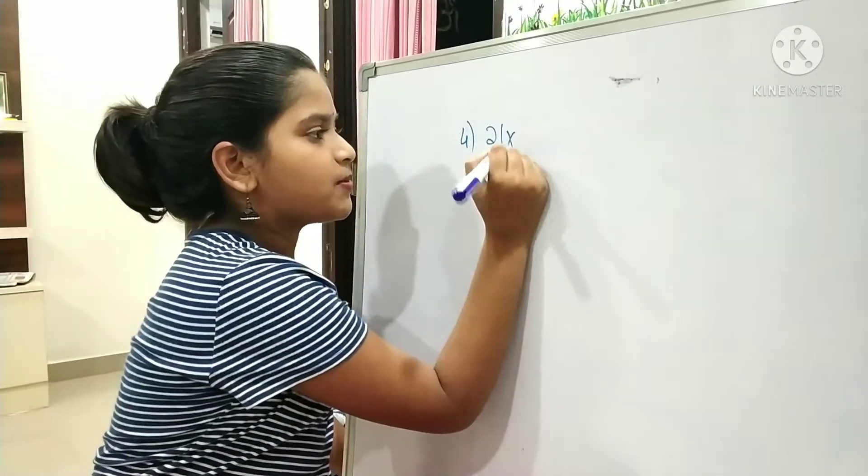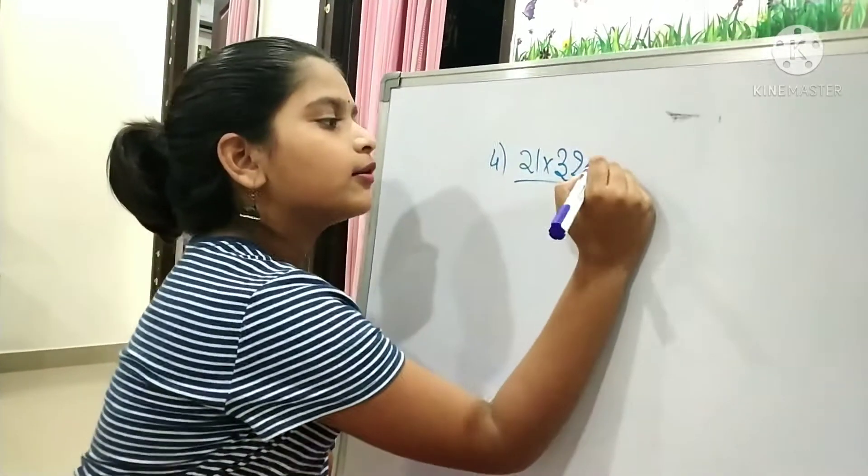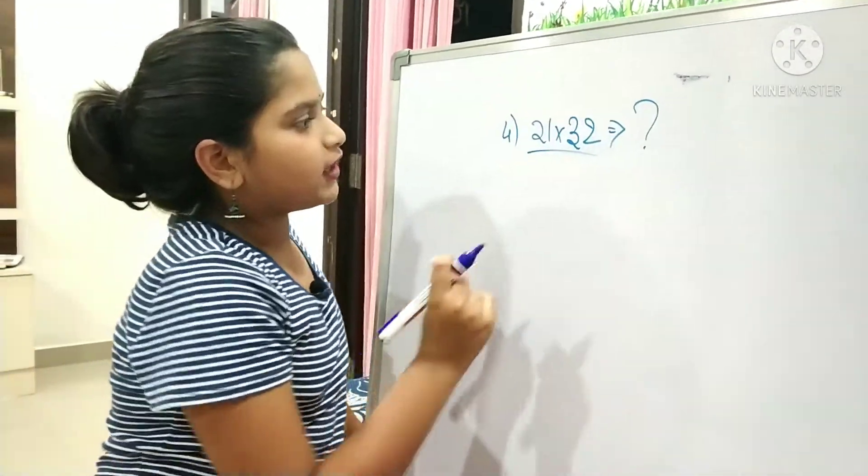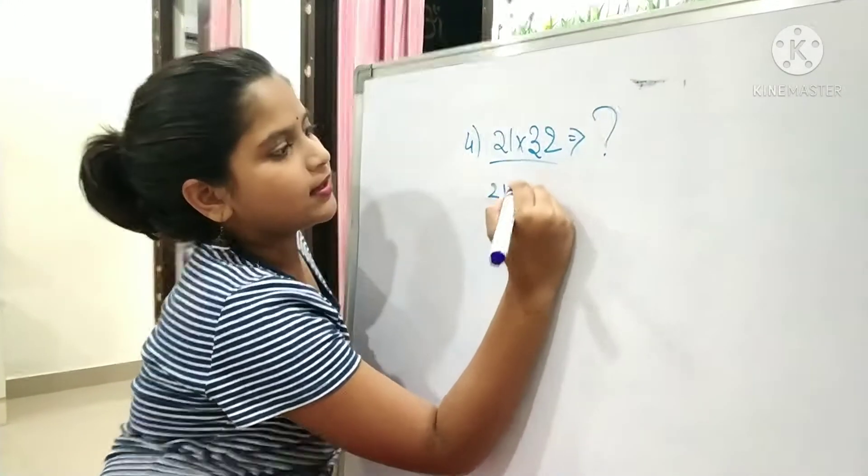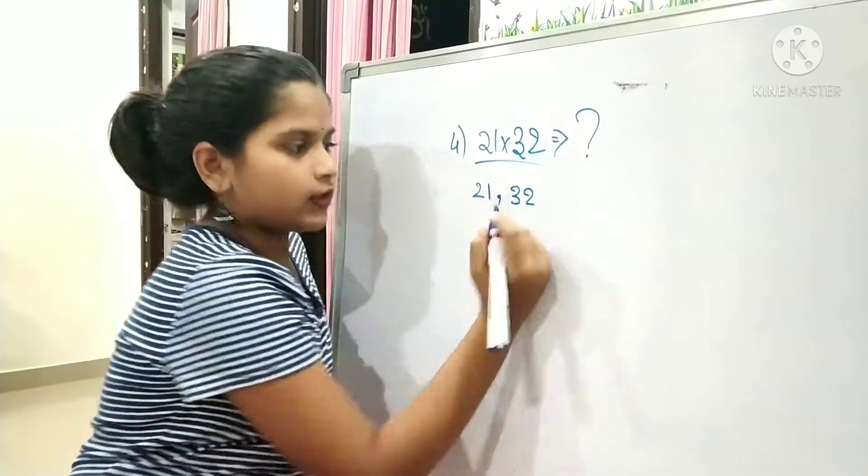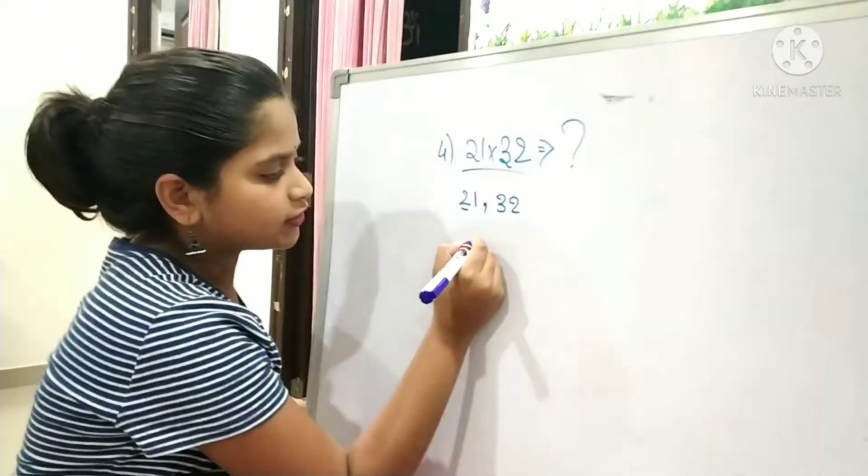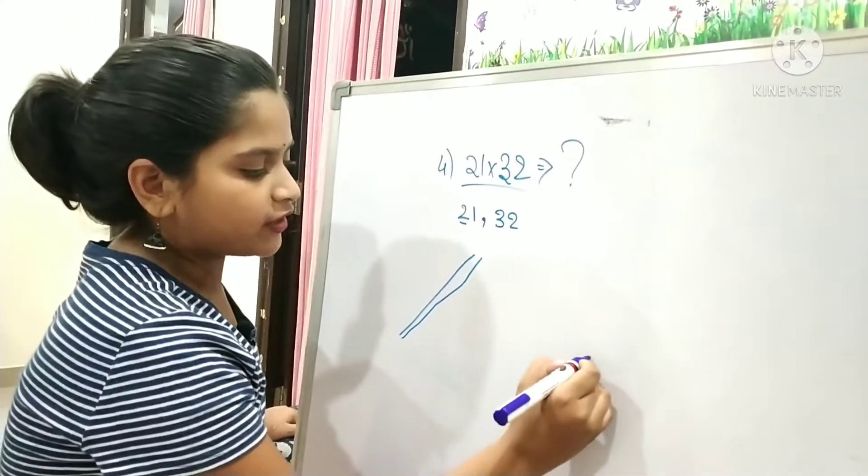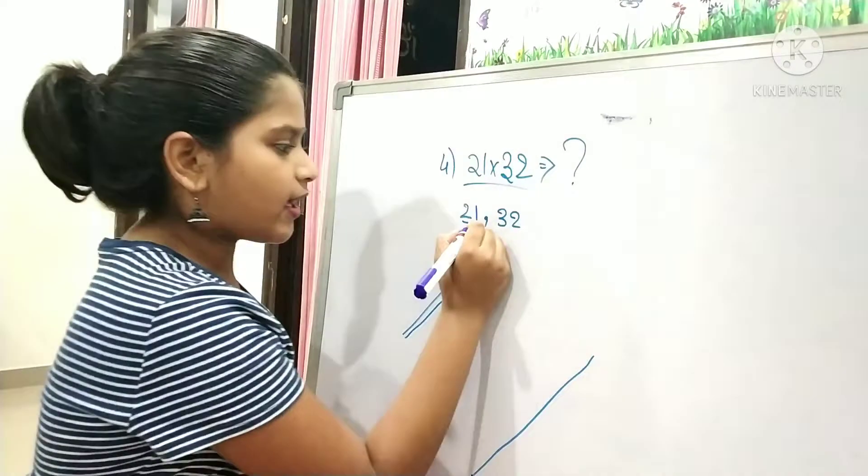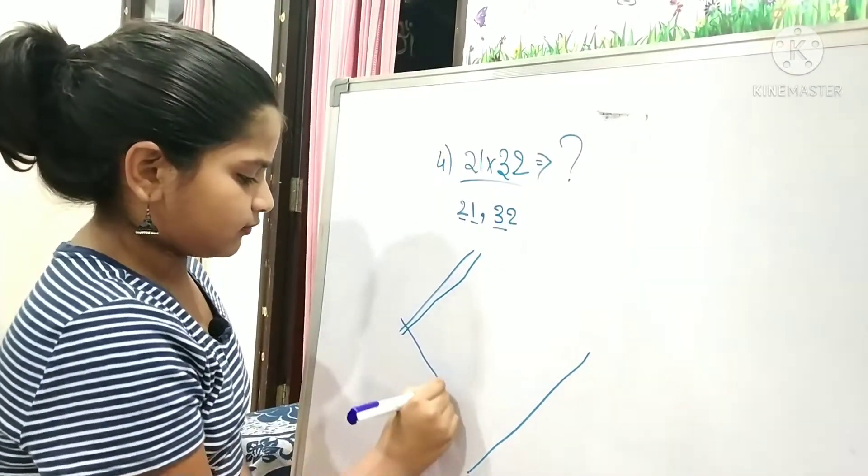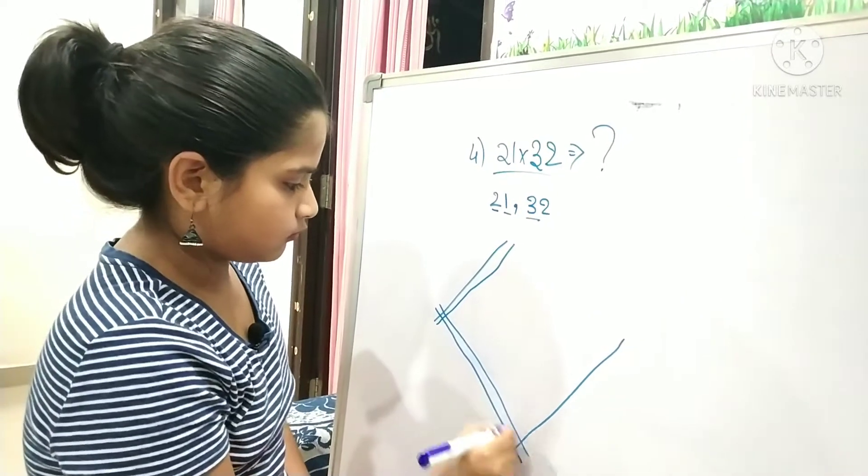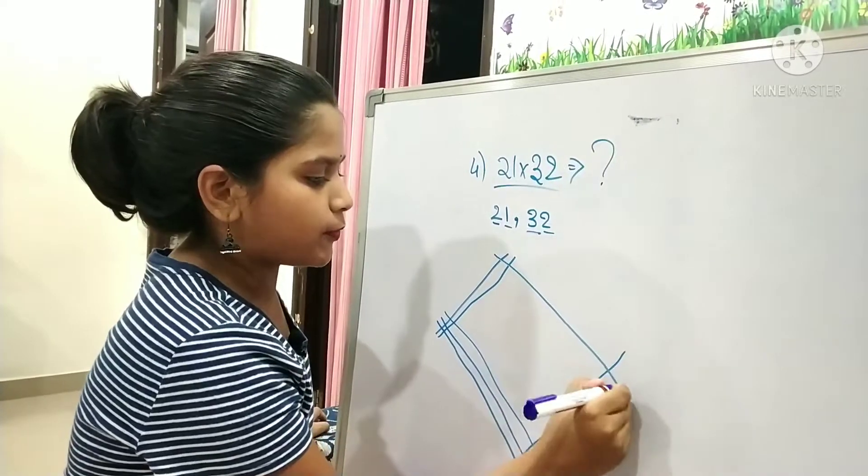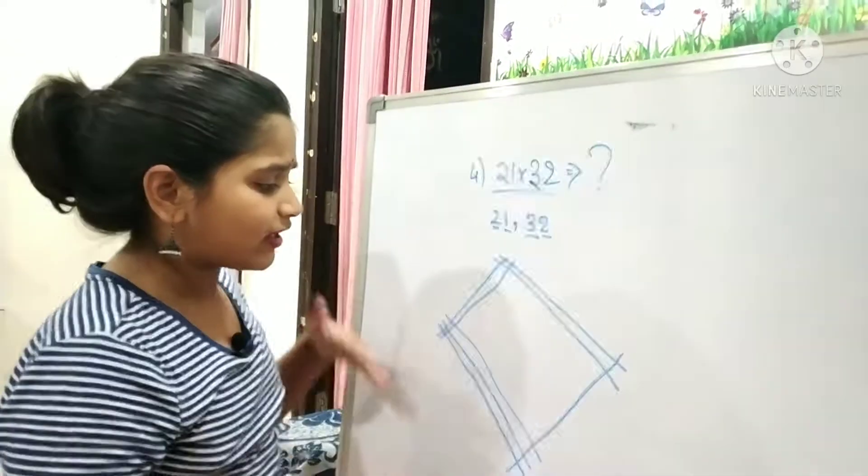All you have to do is take 21 and 32. First, take 2 and draw two diagonal lines with points, and take 1 and draw it on the opposite side. Again, take 3 and draw it here, and take 2 and draw it on the opposite side.